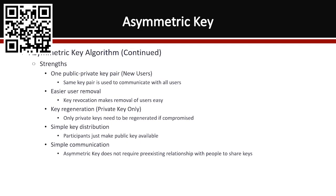Simple key distribution: participants just make public keys available. The public key is out there in the cloud available to everybody. Your private key is held completely within your system. With asymmetric key algorithms, you don't have to communicate with everybody saying here's the key — it's all based on your public key already being out there. You can communicate with anybody because your private key is not shared. It's really good with people that you do not have a pre-existing relationship with.